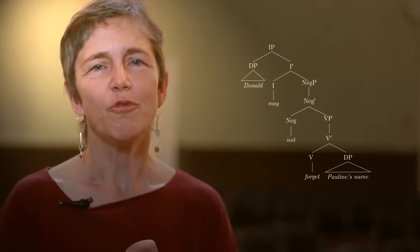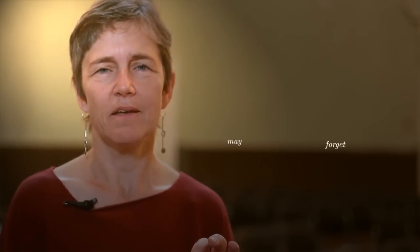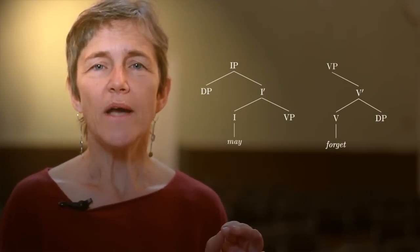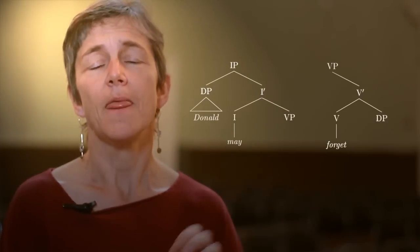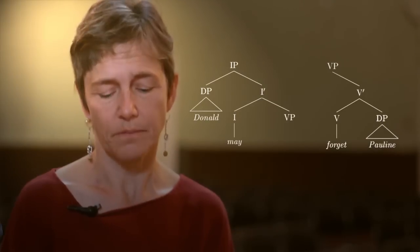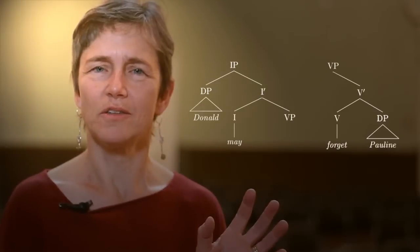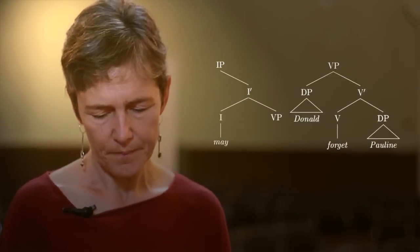But we now have a problem when we think about how we got to this final structure. If we think about what the elementary trees would have to look like for the modal and the main verb to produce the sentence, we wind up with elementary trees where the subject appears in the modal's tree and the object in the verb's tree. But that can't be right, because the subject is not an argument of the modal — the subject is an argument of the verb, getting its participant role from the verb, just like the object does.